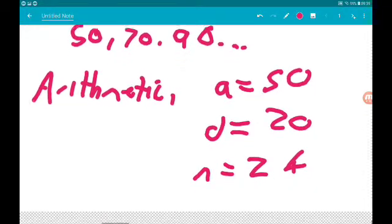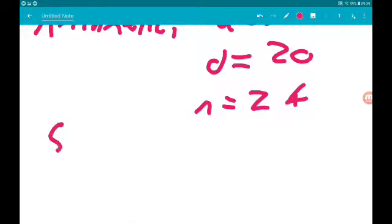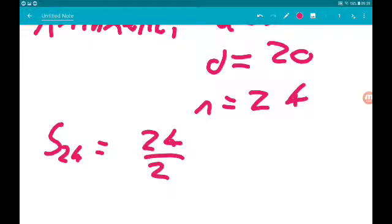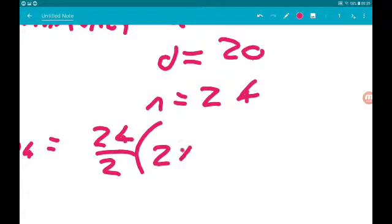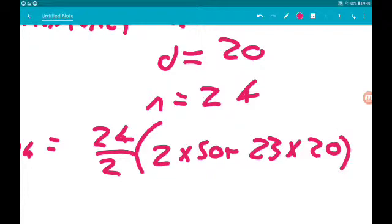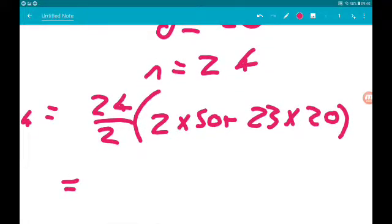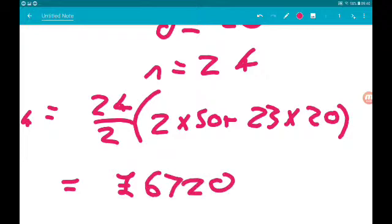So the sum to 24 is n over 2, 24 over 2, times 2 lots of 50, add n minus 1, which is 23, times d, so 20. Now that will give us £6,720. Cool.